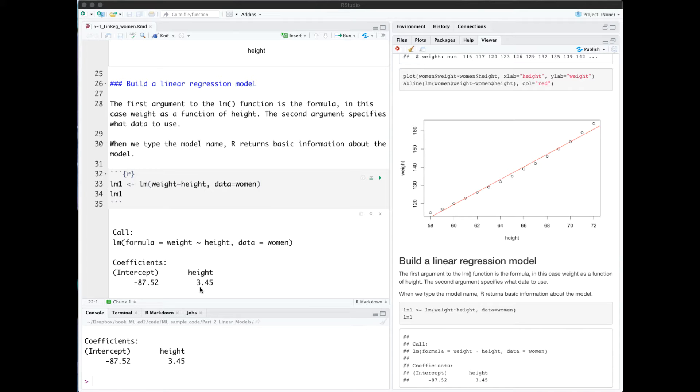So that means that for every extra inch of height of a person, they weigh about 3.5 pounds more. We could express that in the formula weight equals 3.45 times height minus 87.52.